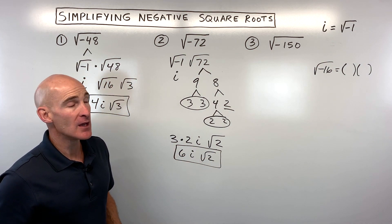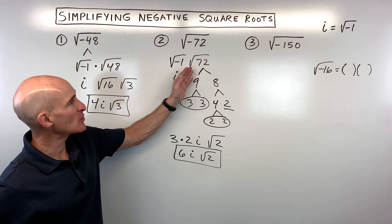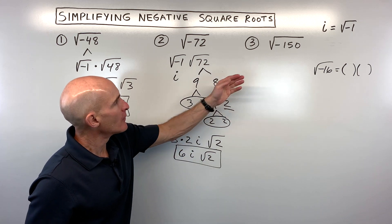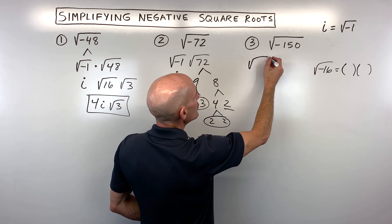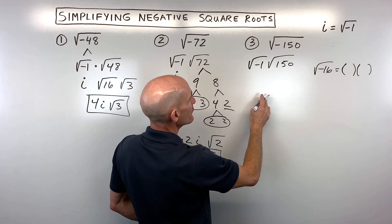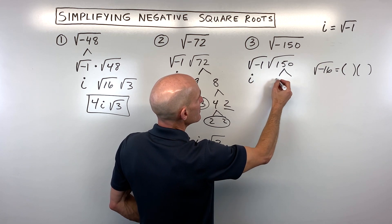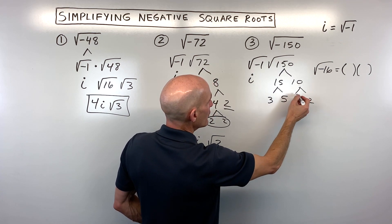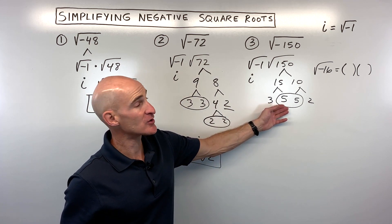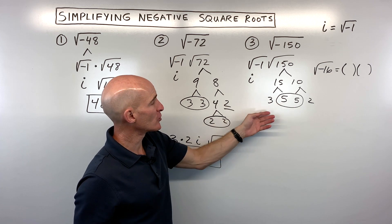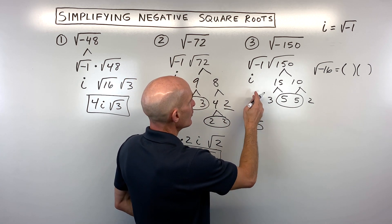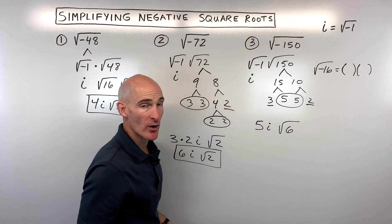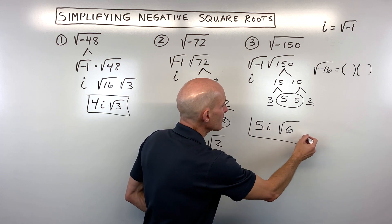A lot of people like the prime factorization tree, especially with larger numbers. If you know the perfect squares that divide out quickly, you can do that — it might be a little faster. For number 3, the square root of negative 150: we know this is the square root of negative 1 times the square root of positive 150. Square root of negative 1 is i for imaginary. 150 breaks down into 15 times 10; 15 is 3 times 5 and 10 is 5 times 2. There's that pair of 5s — that's 5 squared, and the square root of 5 squared is just 5, or think of it as the square root of 25 is 5. So 5 comes out in front, we have the i, and the leftover 3 and 2 multiply to give 6 under the square root. You've got it in fully simplified form: 5i square root of 6.